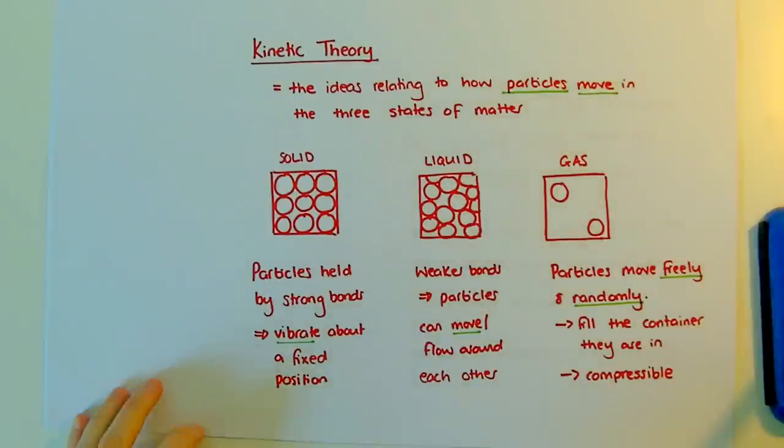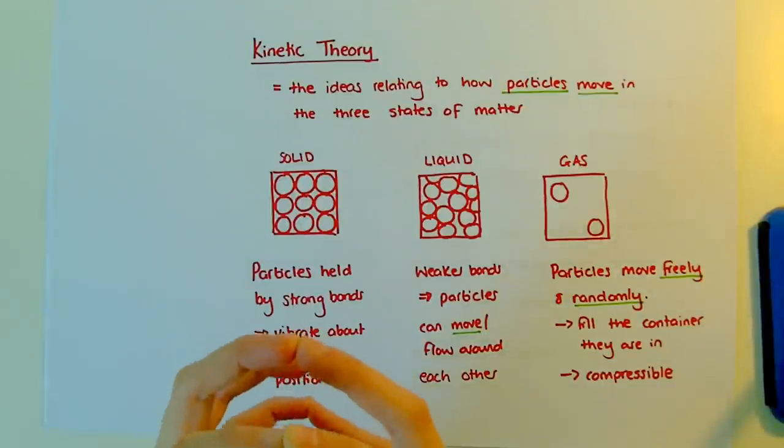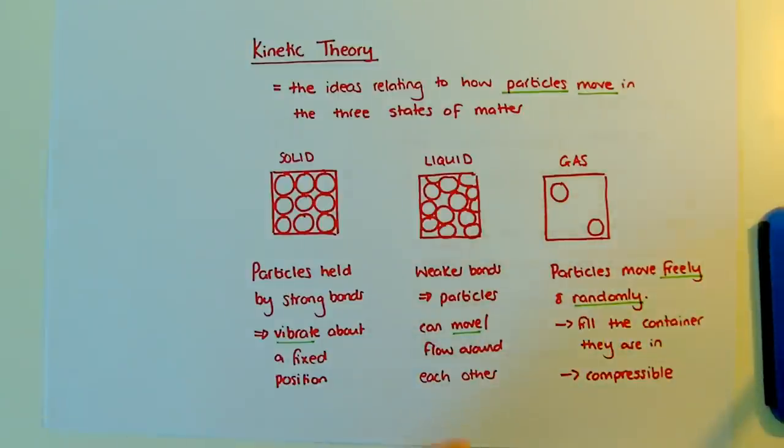In a solid, the particles are held together by strong bonds. They can't move out of their fixed position. All they can do is vibrate. As it turns into a liquid, the bonds get weaker and that allows the particles to move around each other.